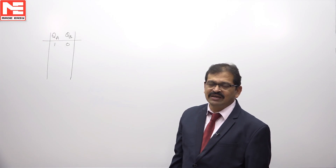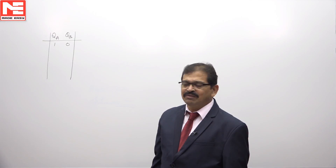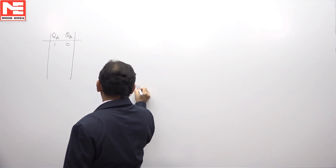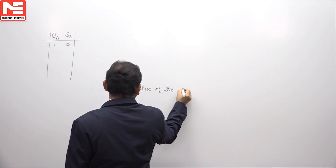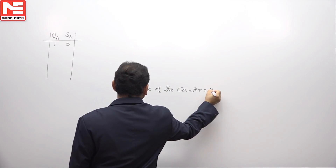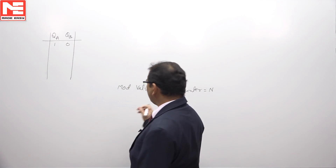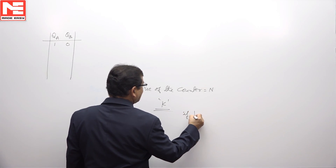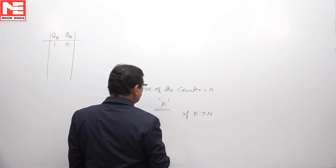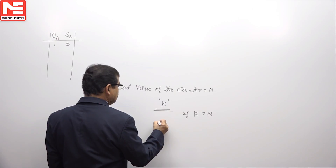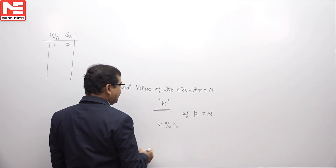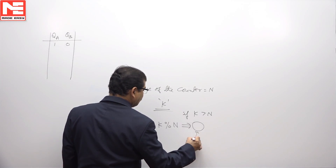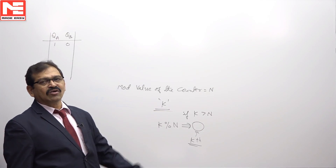To find the content after the 13th clock pulse, we first need to recognize the mod value of the counter. Consider the mod value as n. If k is the number of clock pulses and k is greater than n, we use the remainder operator — k remainder n — to determine the content of the counter after the k-th clock pulse.